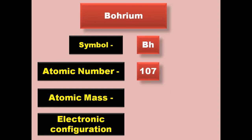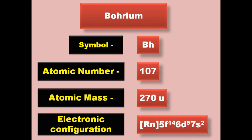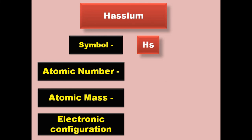Bohrium has symbol Bh, atomic number 107, atomic mass 270, electronic configuration [Rn] 5f14 6d5 7s2. Bohrium is a transition metal and exists in solid form at room temperature.